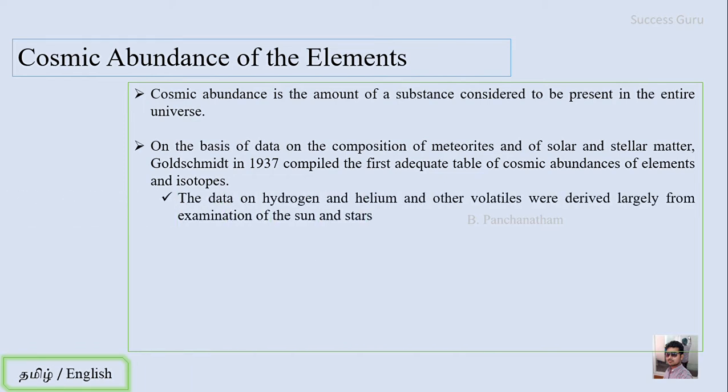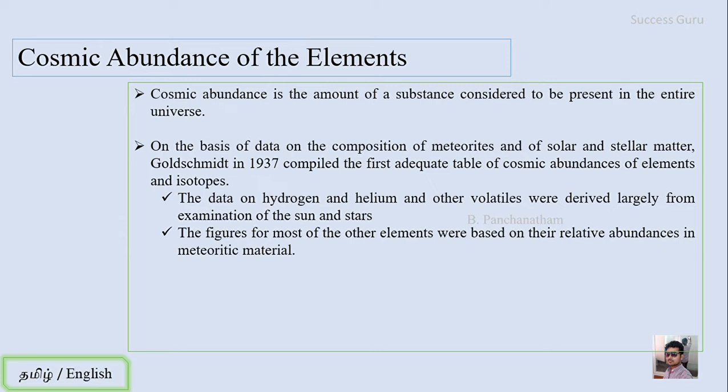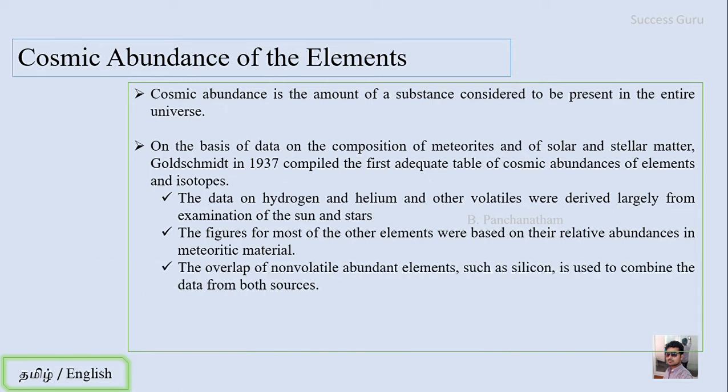If you don't use non-volatile materials, you can use it as a meteorite. You can use it as a silica. Now, in 1937, the first cosmic abundance table was created by Goldschmidt.